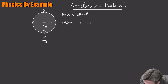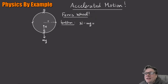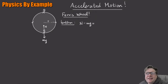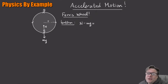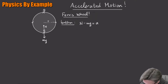We sum the forces in the vertical direction and set it equal to mass times centripetal acceleration, mac. What we need to know is the direction — does this get a plus or a minus sign? The centripetal acceleration always points towards the center of the circle. If we're at the bottom, that ac is pointing towards the center, so that's going to be positive.